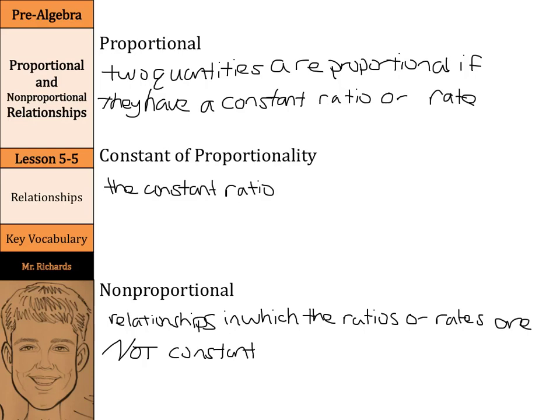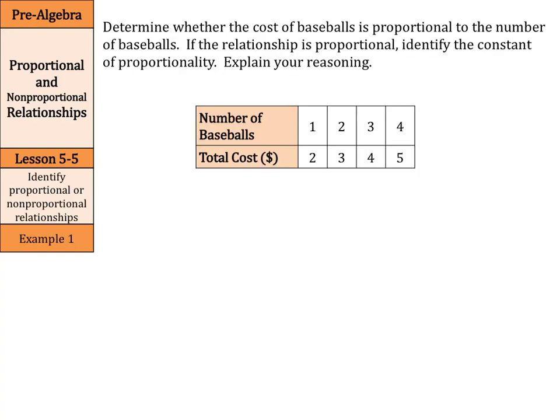We'll take a look at what these actually mean here in our examples. Determine whether the cost of baseballs is proportional to the number of baseballs. If the relationship is proportional, identify the constant of proportionality and explain our reasoning.